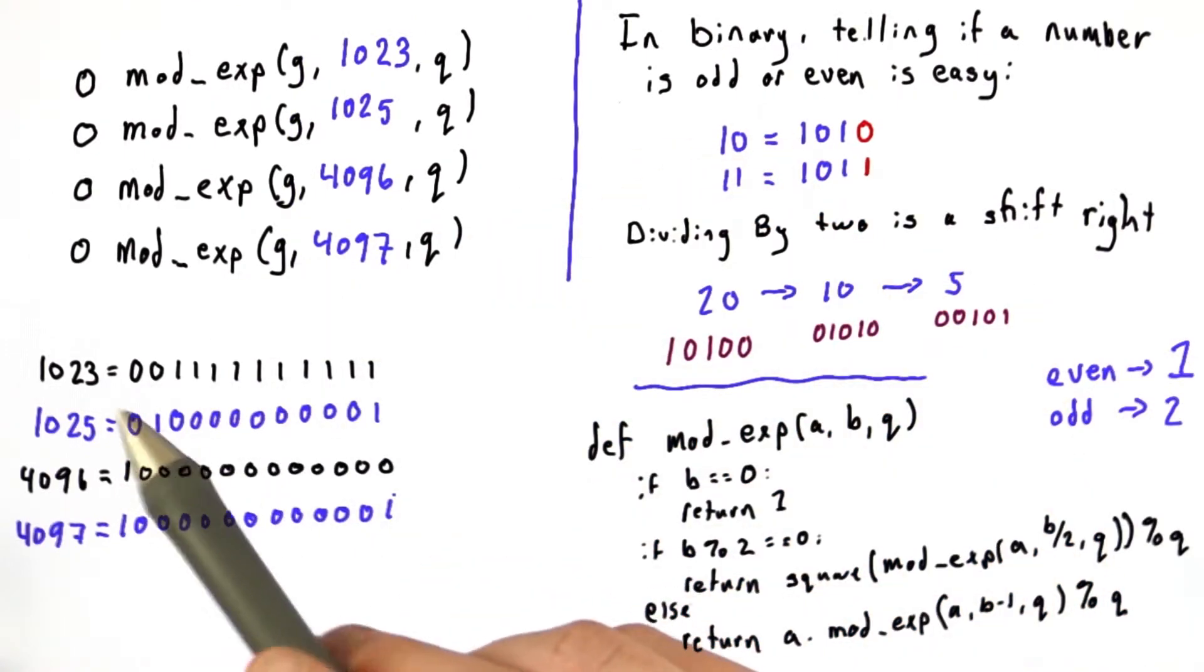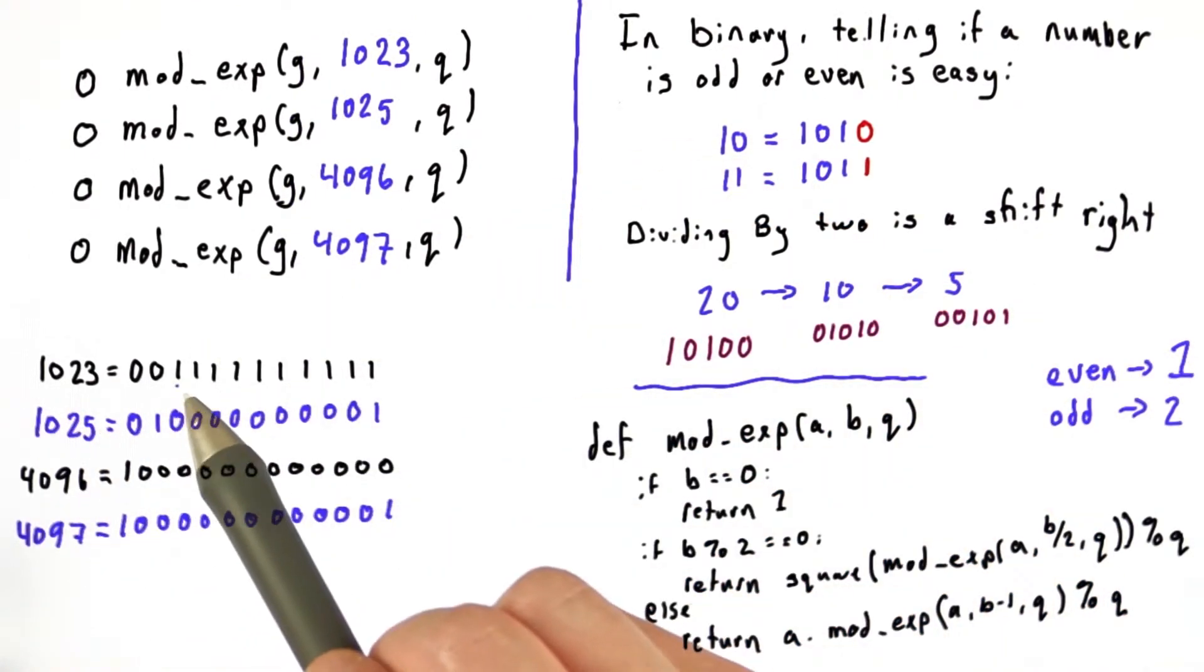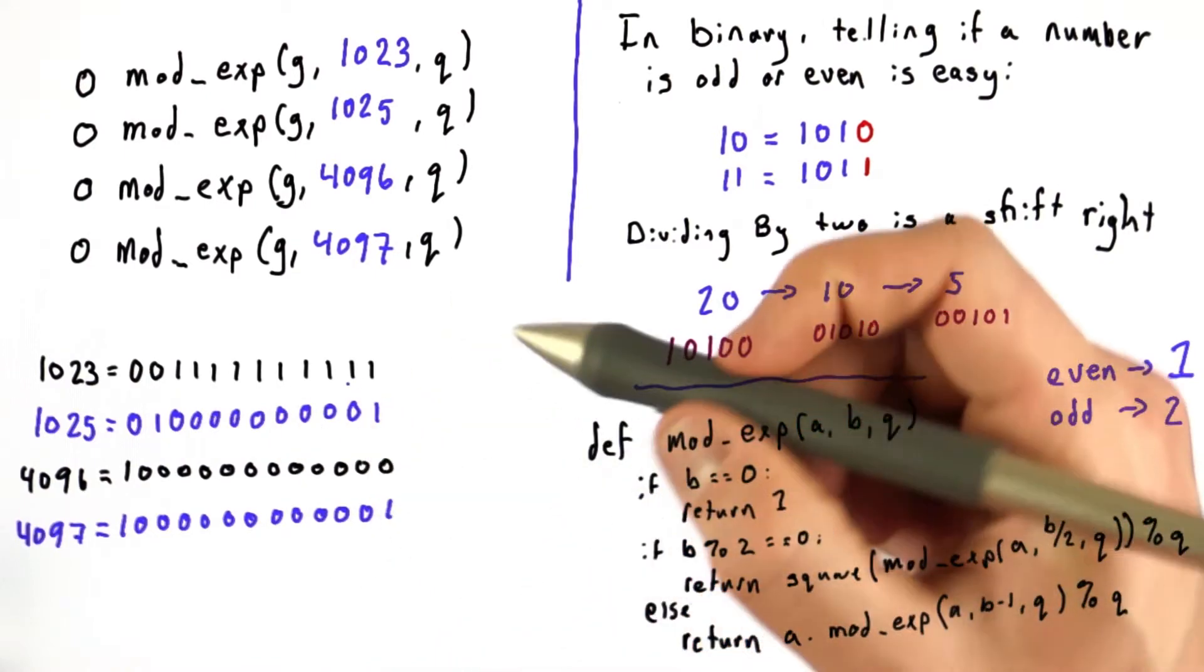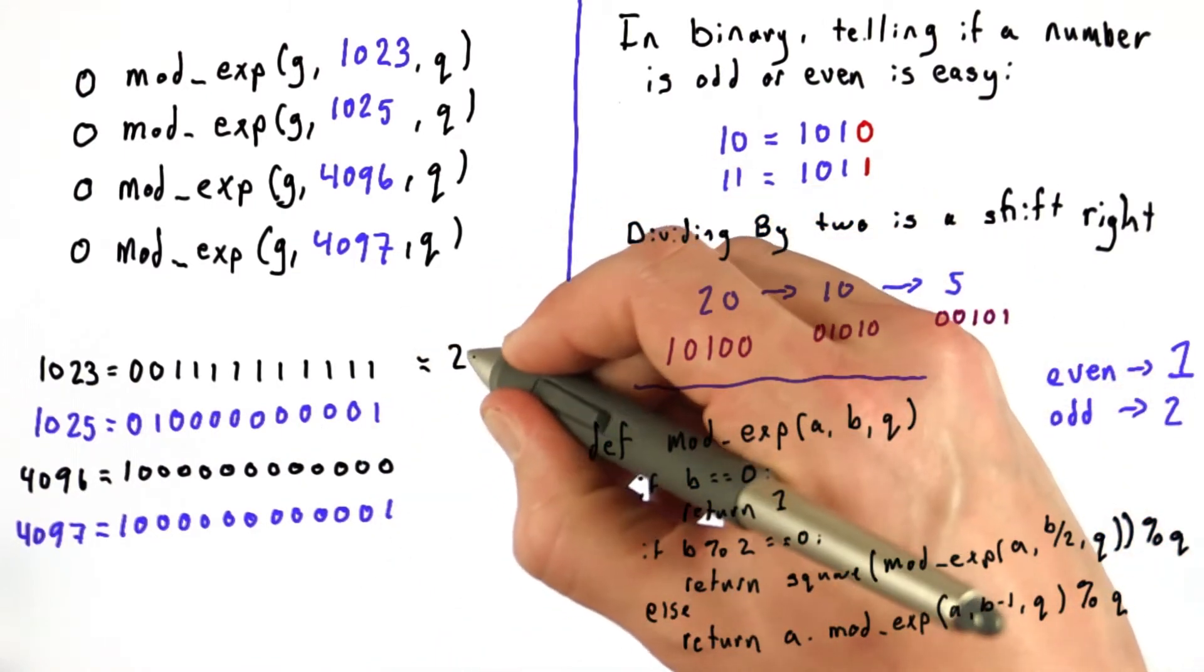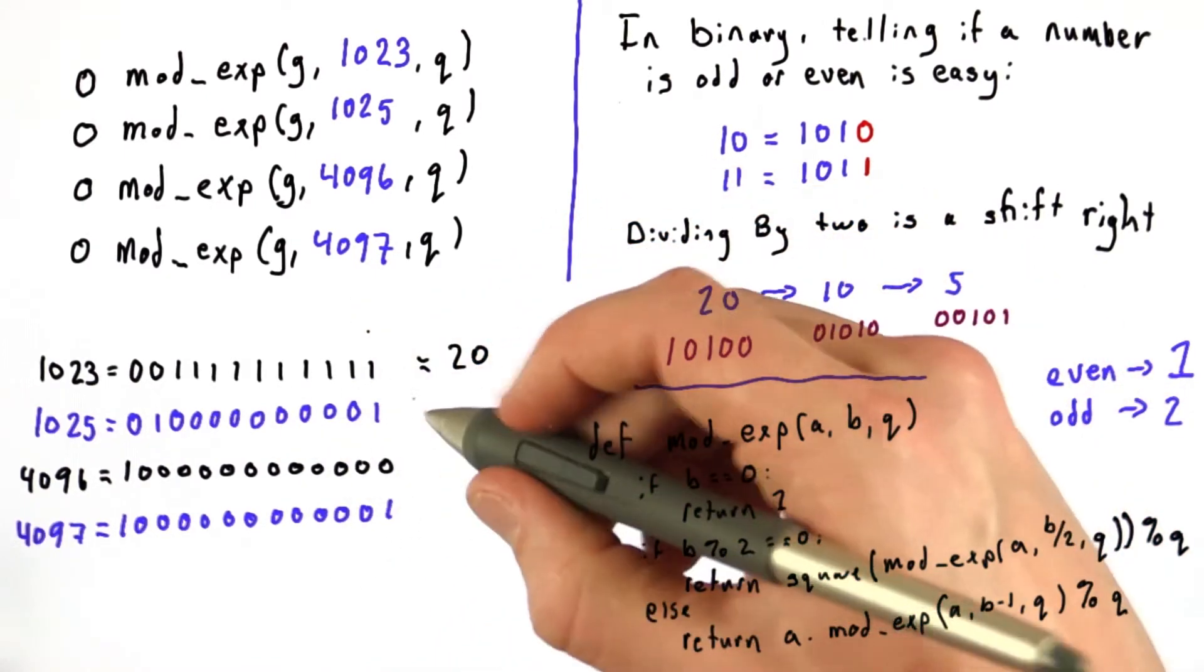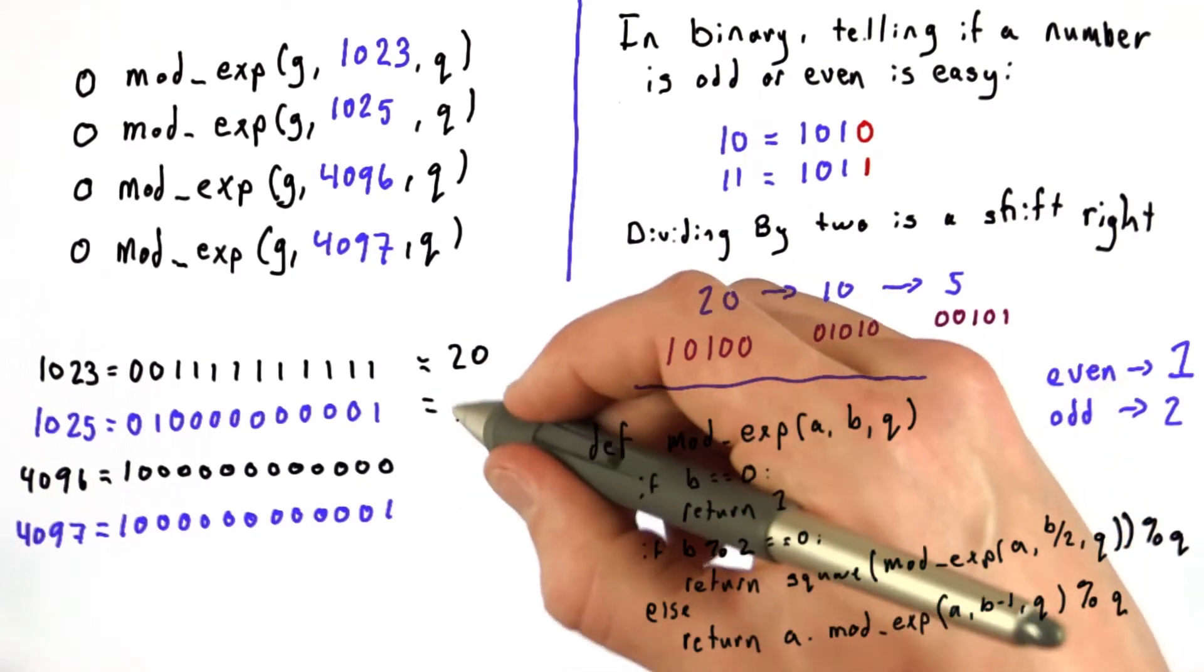Writing our 4 exponents in binary, where 1023 is, that should hopefully be 10 ones, gives us a cost of 20. 1025 has a cost of 13.